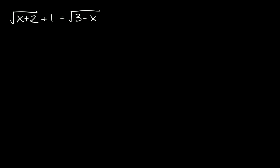Here we have the square root of x plus 2 plus 1 is equal to the square root of 3 minus x. Now in order to get rid of a radical, or square root in this case, all you have to do is square it. If this were a cube root, we would cube it. If this was a fourth root we would raise it to the fourth power. But again this is just a square root so we just have to square it.